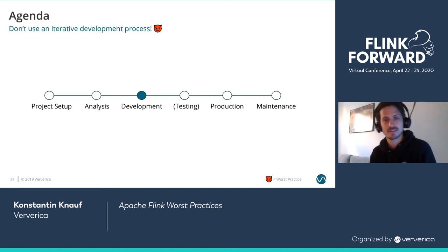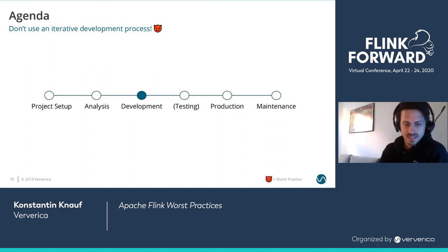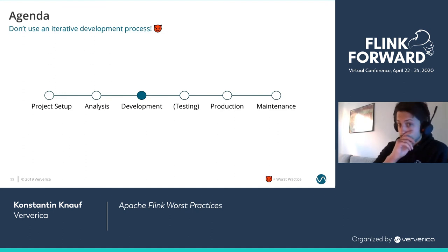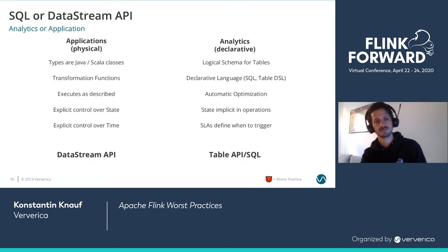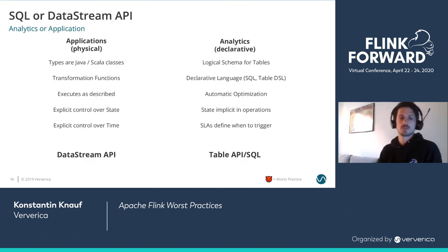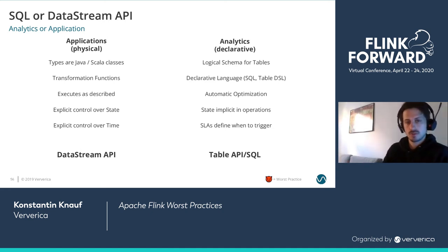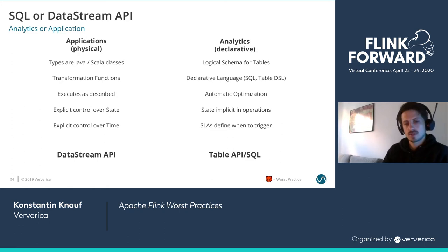We've made it through the analysis phase — requirements are set in stone and we can start development. This will basically be a big basket of gotchas and small tips for Flink development. It probably starts with choosing an API. Most of you have the choice between the Table API and SQL on one hand and the DataStream API on the other. The high-level story is: use the DataStream API for applications, and the Table API for analytics and simple ETL jobs.